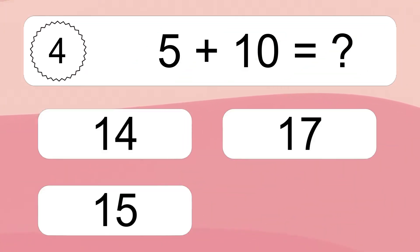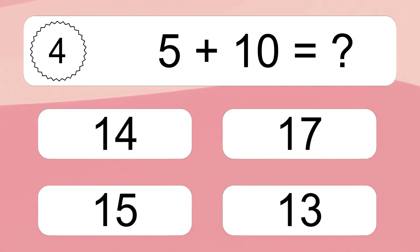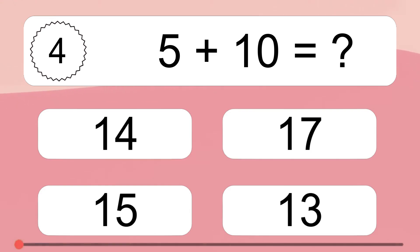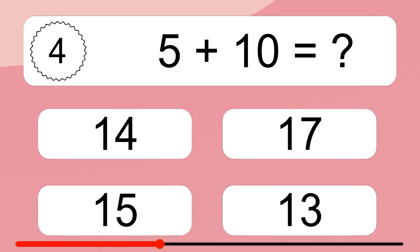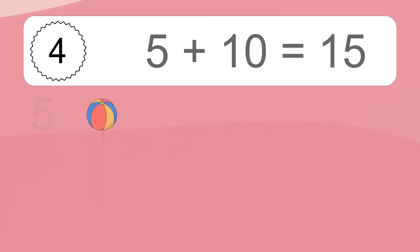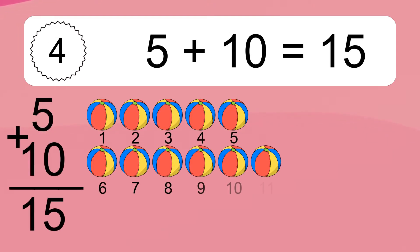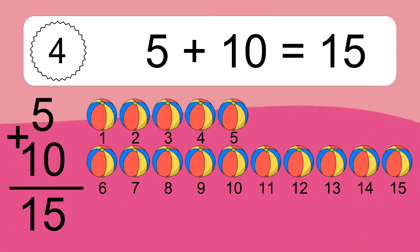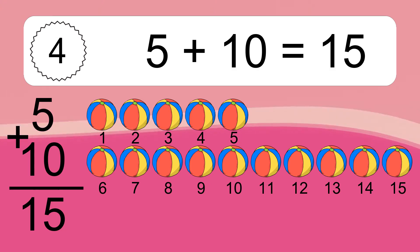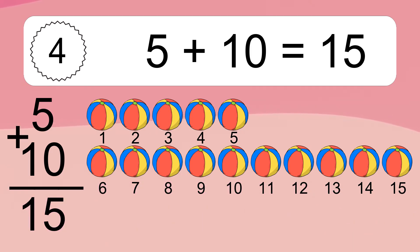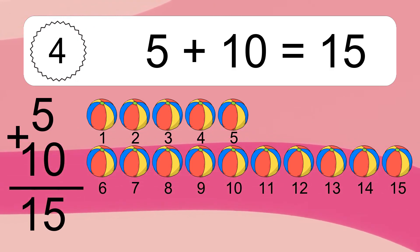5 plus 10 equals what? 5 plus 10 equals 15. Let's count it: 1, 2, 3, 4, 5, 6, 7, 8, 9, 10, 11, 12, 13, 14, 15.